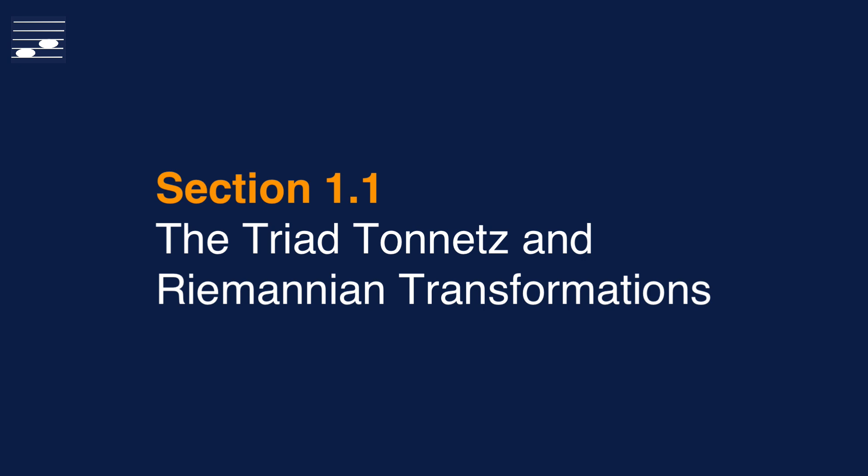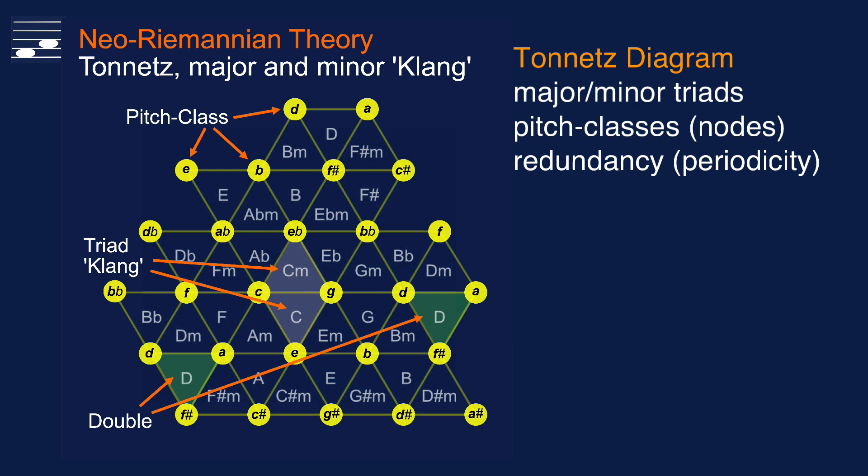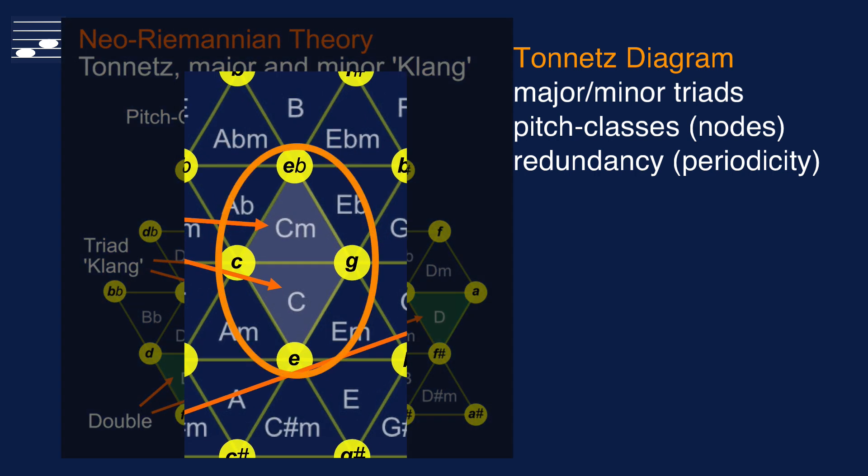This subsection summarizes the essentials from part 1 in the series. The triad Tornetz has the nodes, the chromatic scale pitch classes at the nodal points, the vertices of the triangles containing major and minor triads, such as the triads on root C shown here.